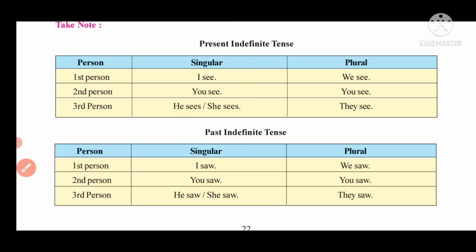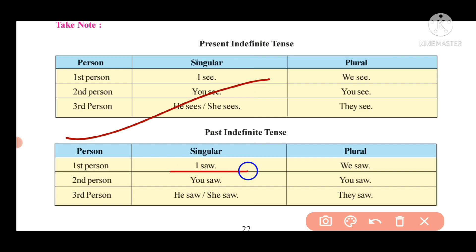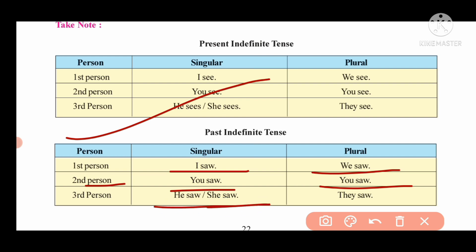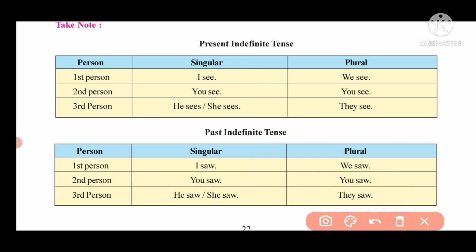These are the present indefinite tense rules. Now, what do we call past indefinite tense? Past tense is simply past tense. First person: I saw, we saw. Second person singular: you saw. Third person: he saw, she saw — all persons use the same form in past indefinite tense.